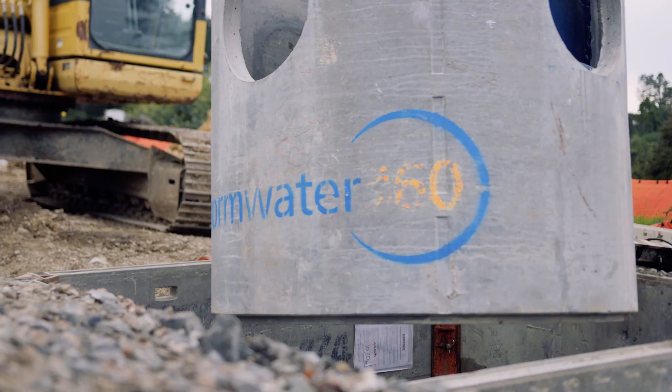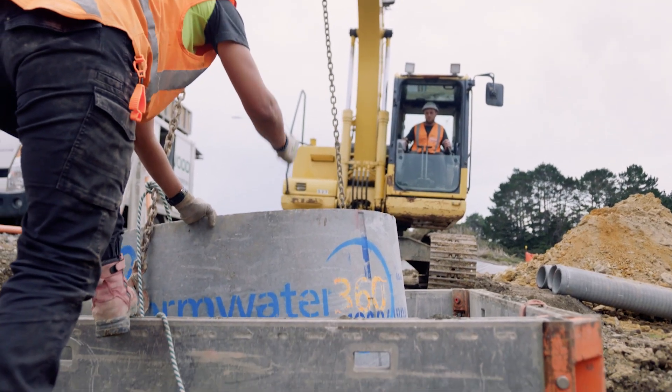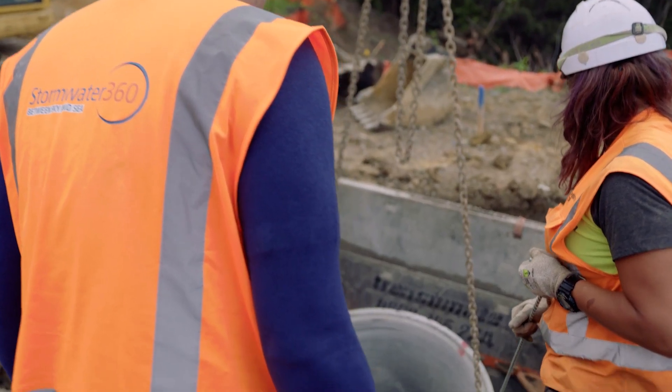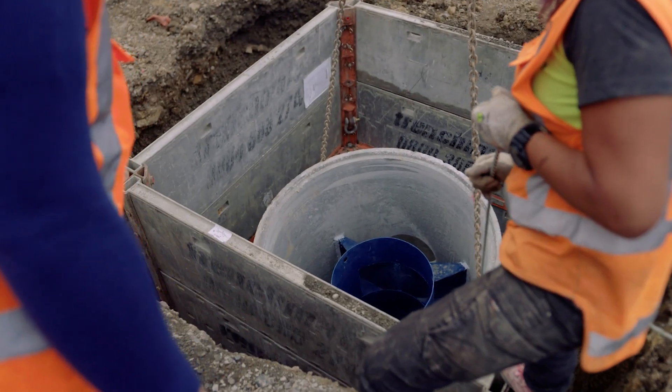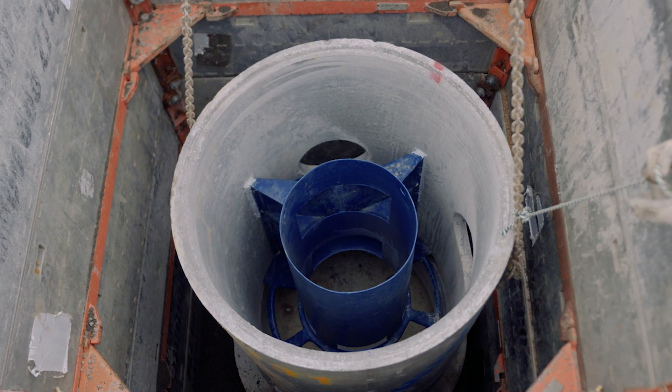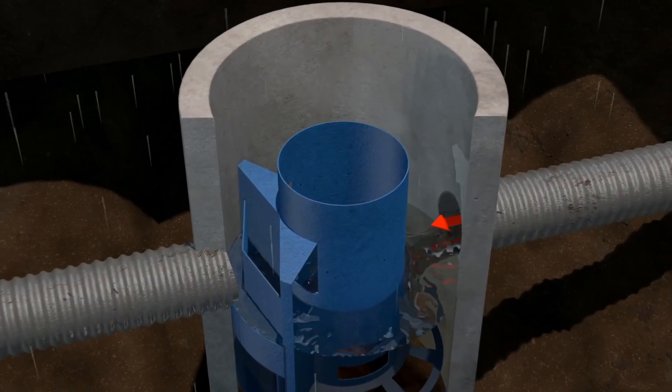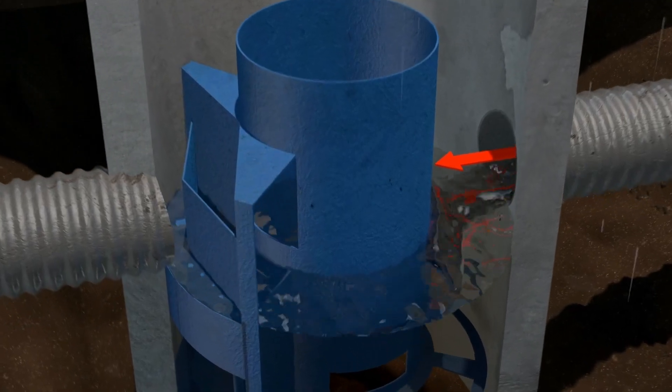The Cascade Separator is an innovative hydrodynamic separator that captures sediment and gross pollutants while also removing hydrocarbons, litter, and debris from stormwater runoff. The treatment process begins as stormwater enters the system through one or multiple inlets or an inlet grate.